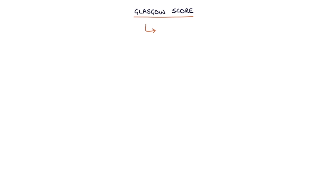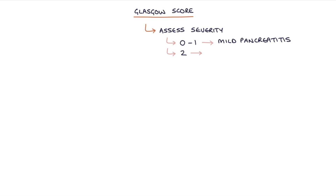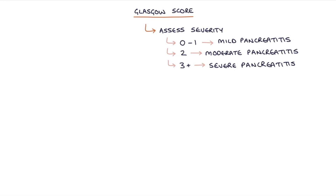The Glasgow score is used to assess the severity of pancreatitis. It gives a numerical score based on how many of the key criteria are present. A score of 0 or 1 indicates mild pancreatitis, a score of 2 indicates moderate pancreatitis, and a score of 3 or more indicates severe pancreatitis. The criteria can be remembered using the PANCREAS mnemonic, giving one point for each criterion that is true.